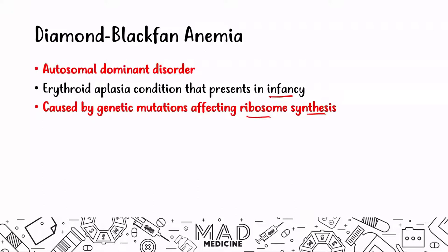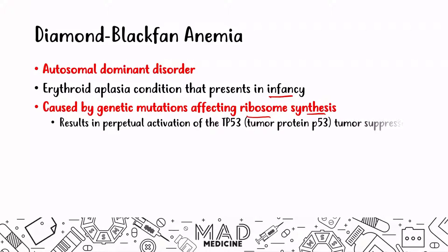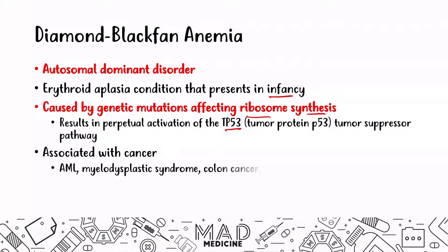Rather, there is an issue with ribosome synthesis, and what's going to happen is you'll see perpetual activation of the TP53 (P53) gene, which is a tumor suppressor pathway. DBA is also associated with cancer. If the TP53 gene is not functioning properly, you can see a high rate of cancer in these patients, including AML, myelodysplastic syndromes, colon cancer, genital cancers, and osteosarcomas.